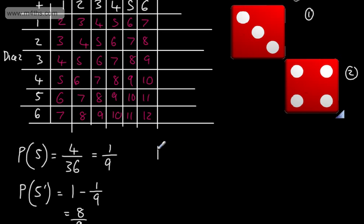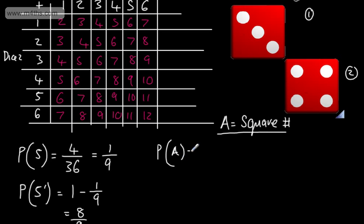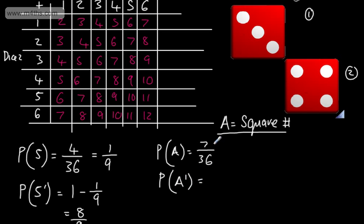We can now see how much easier it is to work with one minus a value than counting all the others. Let's look at defining a specific event. I'll say event A is obtaining a sum that is a square number. So the probability of A — looking for the square numbers, we've got four and nine. Counting those entries: one, two, three, four, five, six, seven. So we can say the probability of A is seven out of 36. The probability of obtaining a sum that is not a square number is whatever's left: 29 over 36.